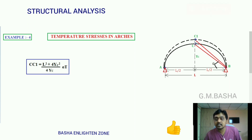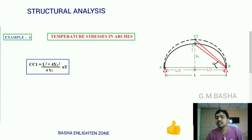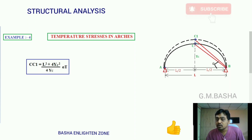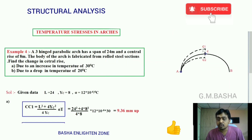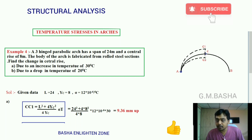Whenever there is any effect of temperature in this type of parabolic arch, due to the hinge at the central position, a three-hinged arch will simply change its central rise. If there is an increase in temperature it will expand from C to C1, and if there is a drop in temperature it will contract from C to C2.